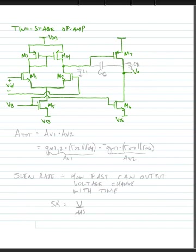Alright, we've already seen both of these stages numerous times. So we know that the total gain is equal to Av1 times Av2. We've seen both of these circuits before, so we know that the gain for Av1, for instance, is Gm12 times the total resistance, which is Ro2 in parallel with Ro4. And we know that the gain Av2 is equal to Gm7 times Ro7 in parallel with Ro6.